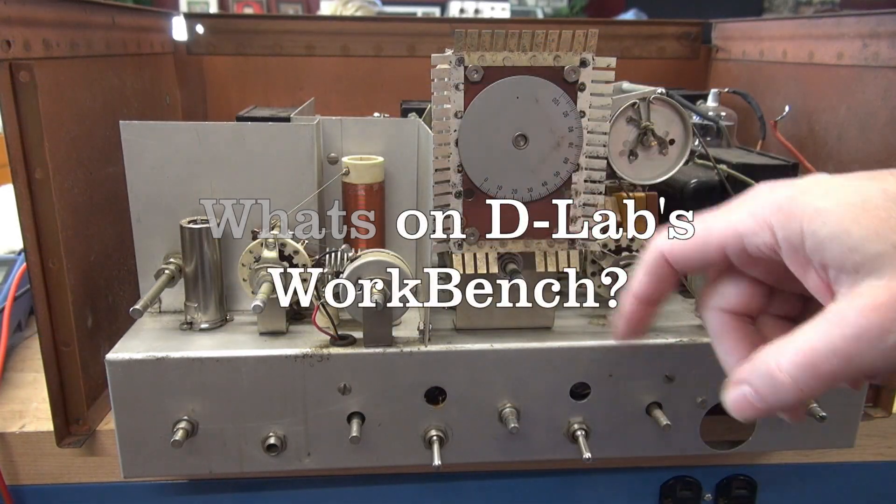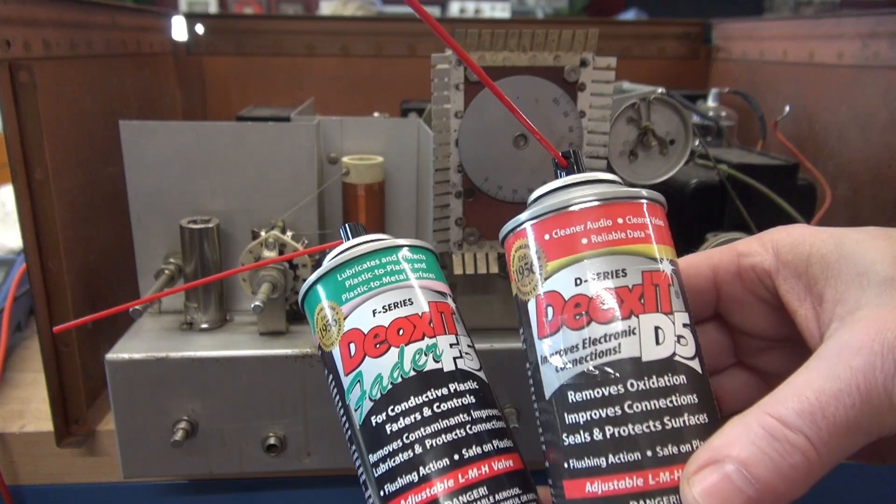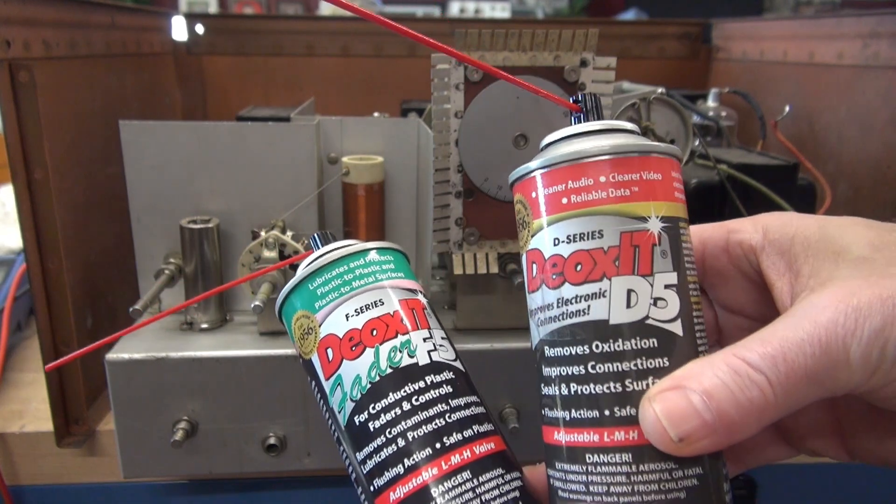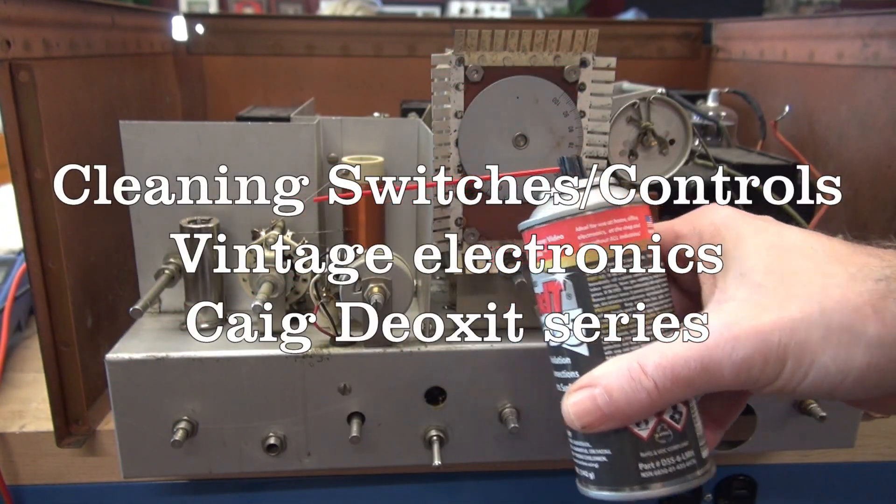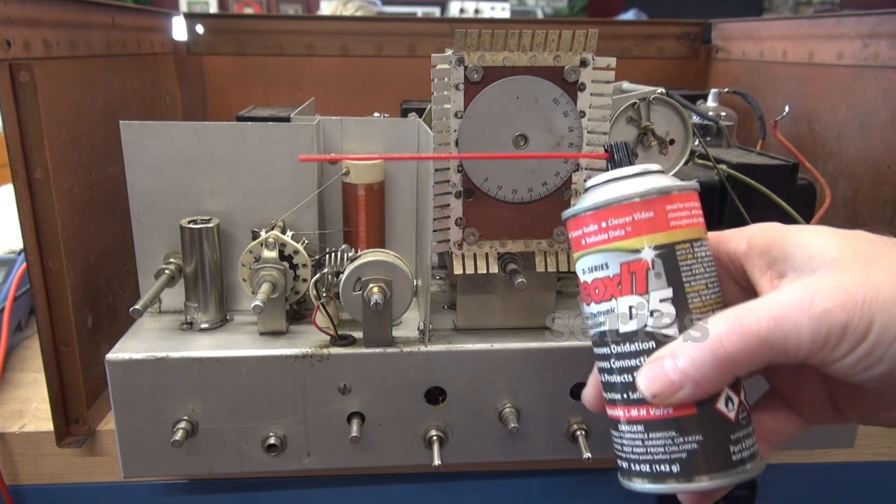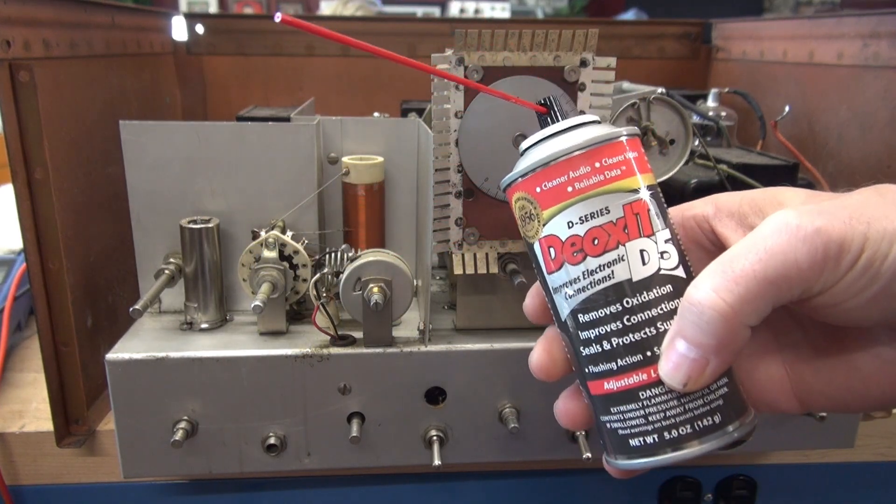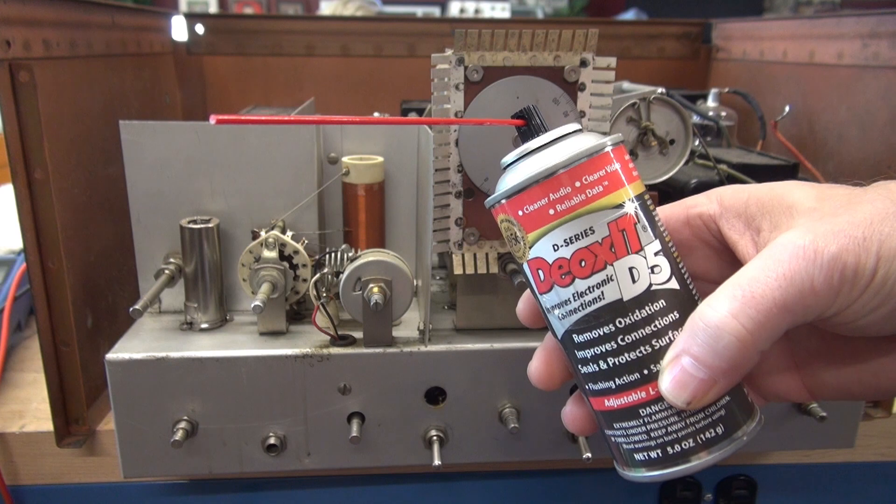For switches and controls, I use these products made by Keg. So Deoxid D5 I use on the rotary switches and wire wound pots. D5 is designed to clean metal on metal surfaces.